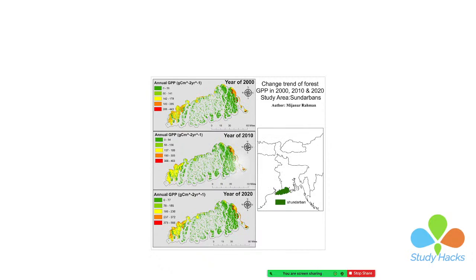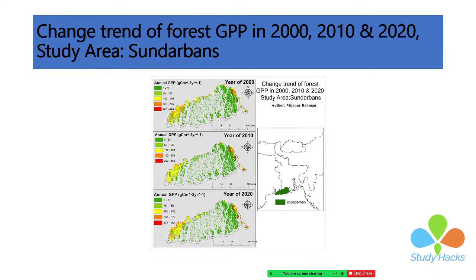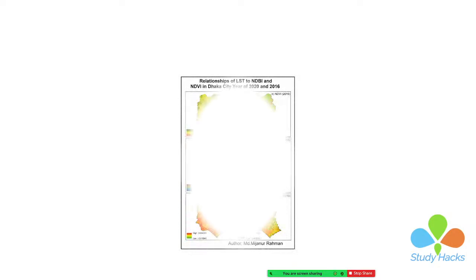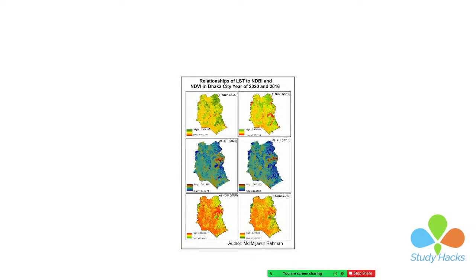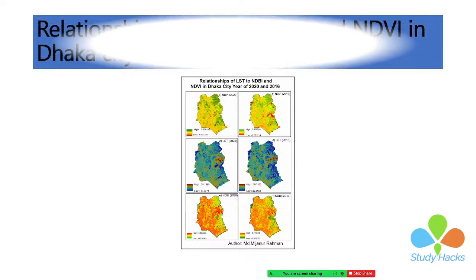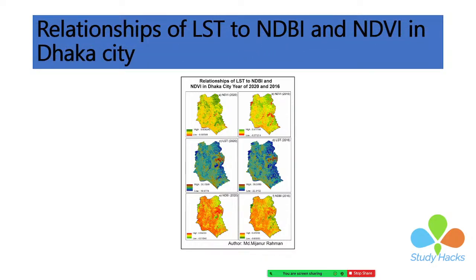We can do all of this using the Google Earth Engine platform. This is another project for the trend of forest gross primary production of the Sundarbans — this is part of our research work. I made all of these things using the Google Earth Engine platform, then simply downloaded the TIFF image and made the map layout using ArcMap software. This is another project for the relationship between LST, EVI, and NDVI — another research paper where we made maps using Google Earth Engine.